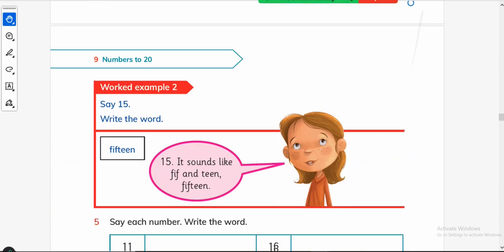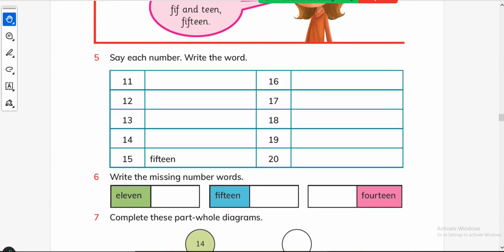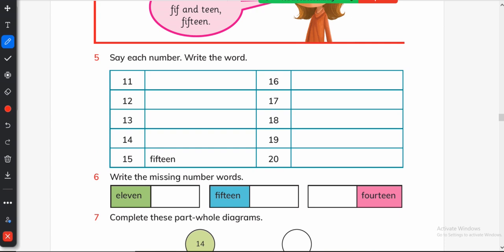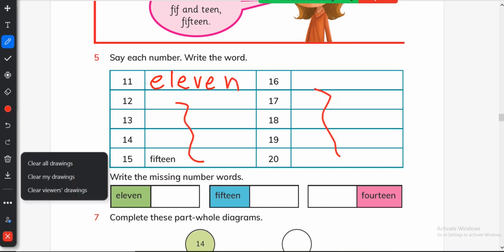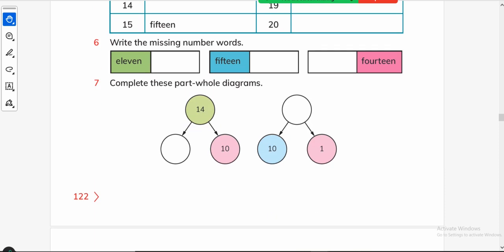Next is write the numbers. Here they have to write the words like 11 with spellings E-L-E-V-E-N and write rest of the spellings. I don't want to waste your time or my time so I'm going really quick.